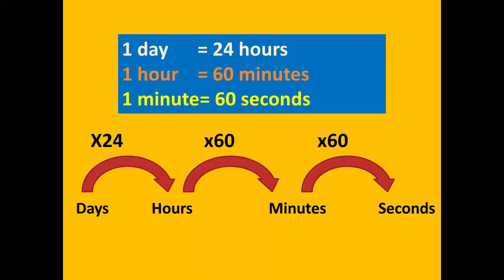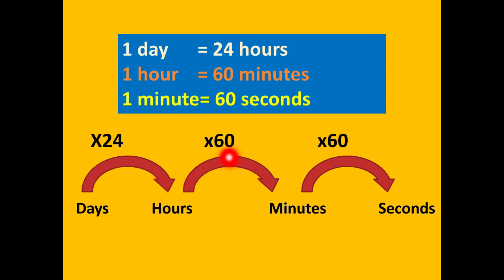Today we will learn how to convert one unit of time into another. We already know that one day has 24 hours, one hour has 60 minutes, and one minute has 60 seconds. So if we are willing to go from days to hours, we multiply by 24. To convert hours into minutes, we multiply by 60, and to convert minutes into seconds, we also multiply by 60. We can see that going from a bigger unit to a smaller unit means we are multiplying.